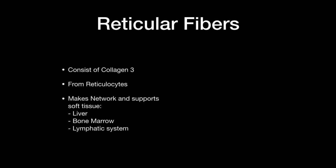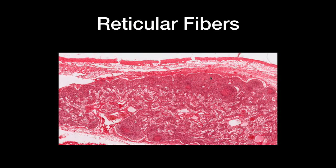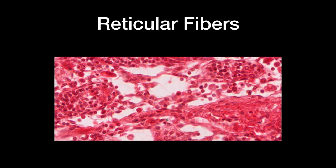Reticular fibers are mainly type 3 collagen and are made by reticulocytes, which form a network supporting soft tissues such as the liver, bone marrow, and lymphatic system. Looking at a cross-section of the lymph nodes, to find reticular fibers it's easier to zoom into the lighter areas. And zooming in, the slide looks quite dense and complex.